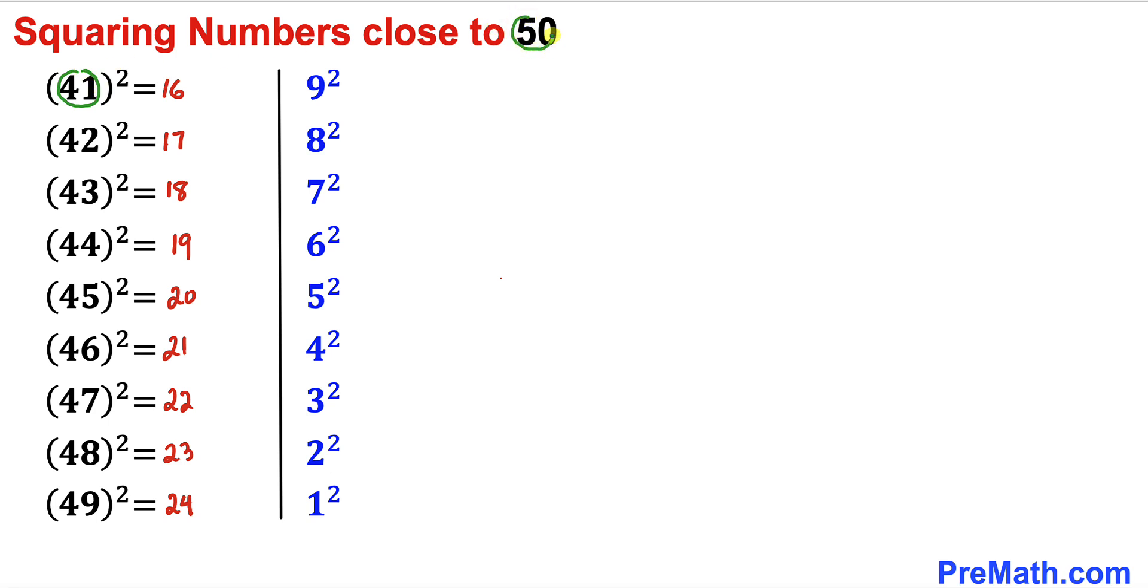Here's our next step. Let's focus on 41, and the difference between 41 and 50 is 9. Likewise, the difference between 42 and 50 is 8, the difference between 43 and 50 is 7, and so on. Now we can see 9 squared is 81, 8 squared is 64, and the list goes on.